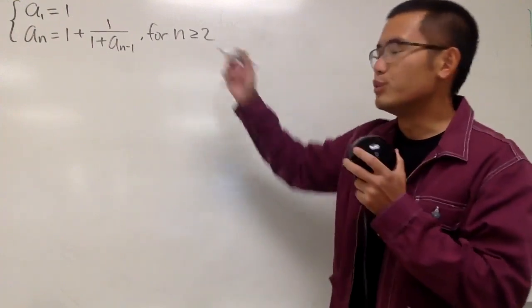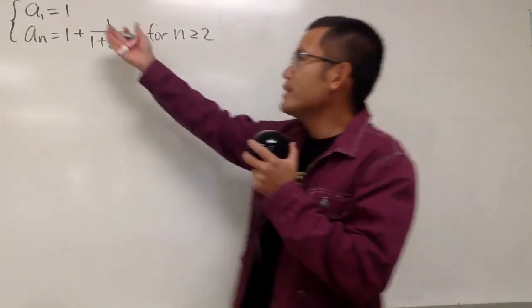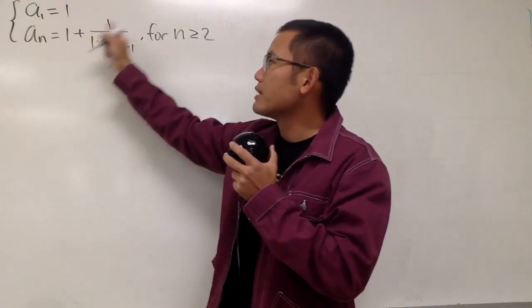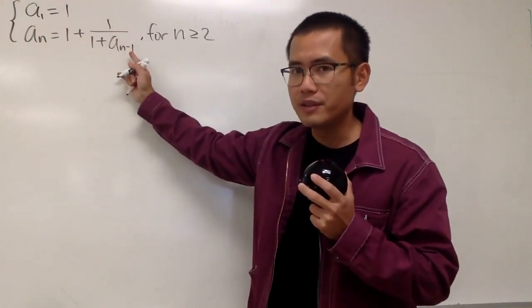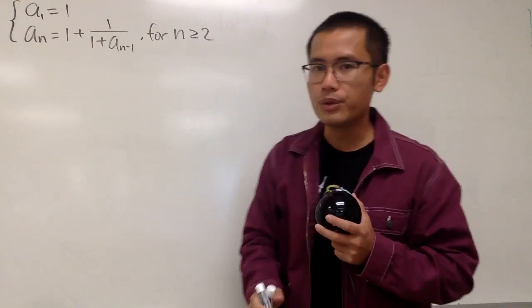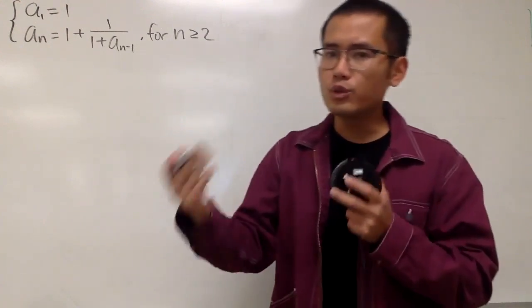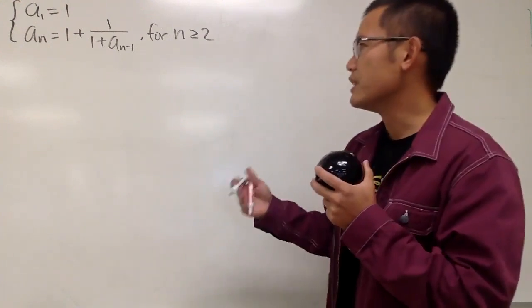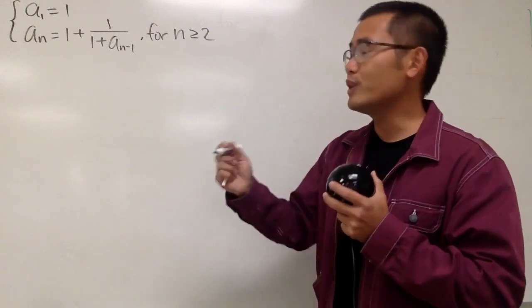Okay, in this video we are going to observe this recursive formula, which says a₁ is equal to 1, and aₙ is equal to 1 plus 1 over 1 plus its previous term, when n is greater than or equal to 2. So let's go ahead and just write down the first few terms to see the behavior of all this, and hopefully we can see a pattern.